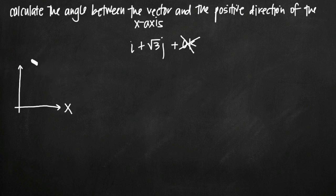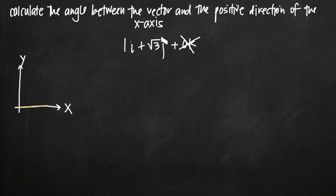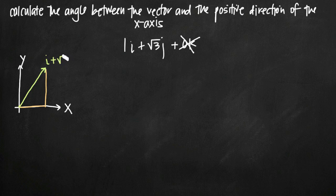If we have an x-y coordinate system with our x and y axes, i plus the square root of 3j can be represented by this vector. We have a coefficient of 1 on our i component — so 1i plus square root of 3j. Since i corresponds to the x component, we go out along the x-axis a distance of 1. Then our j component corresponds with y, so we go up a distance of square root of 3. Connecting the origin to that terminal point gives us the vector i plus square root of 3j.